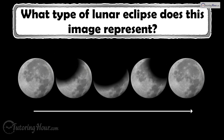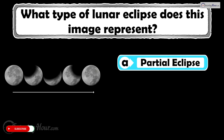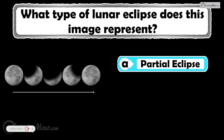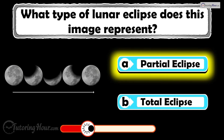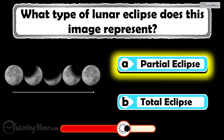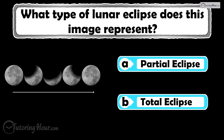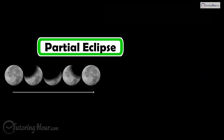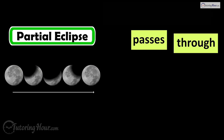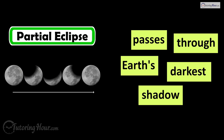What type of lunar eclipse does this image represent? Is it A, partial eclipse, or B, total eclipse? The correct answer is a partial lunar eclipse. Only part of the moon passes through Earth's darkest shadow.